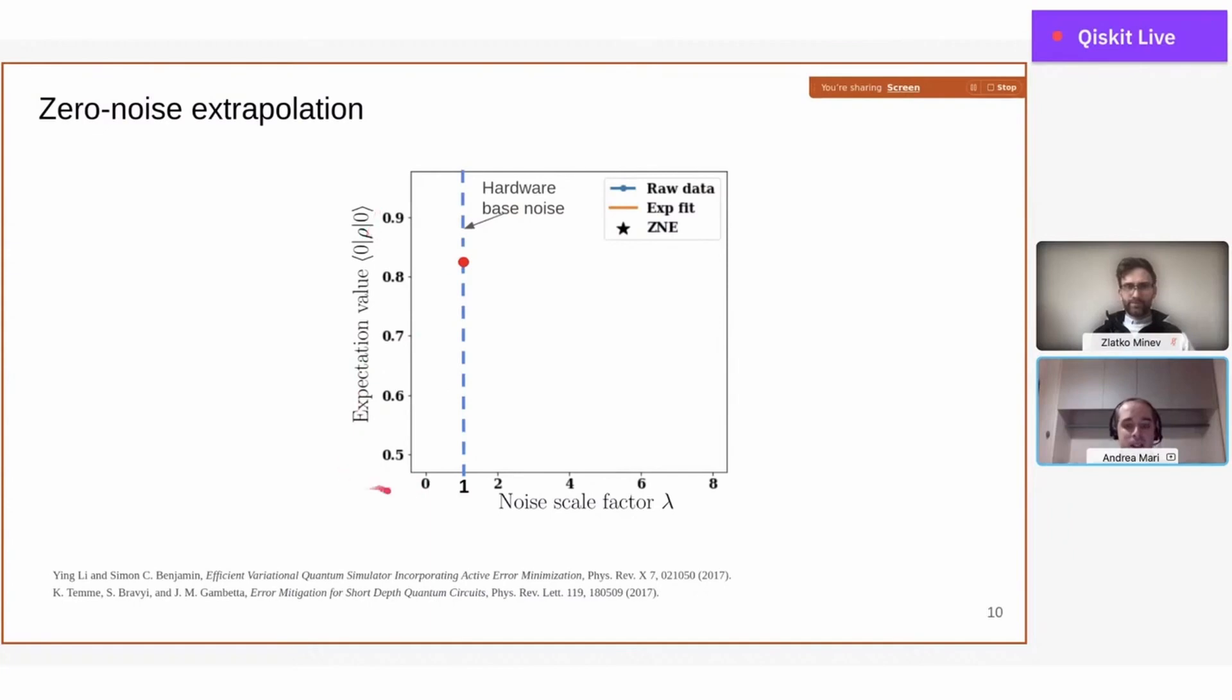We call this noise parameter lambda and normalize it such that when lambda equals one, we are actually executing the circuit at the hardware noise. So if we measure an expectation value, we get a point at this lambda equal one axis.